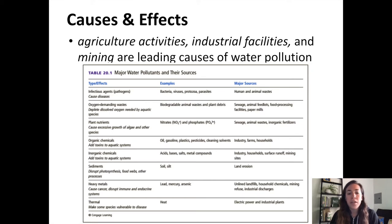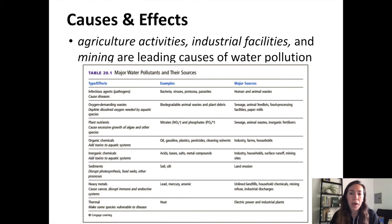Sediment would disrupt the turbidity of a water system — we could see those as soils, silts, and other clouding agents from erosion. Heavy metals like lead, mercury, and arsenic are going to enter the water system, and these are problematic to the bodies of both animals and people because they interrupt endocrine function, disrupt the immune system, have effects on the nervous system, and can cause cancers.